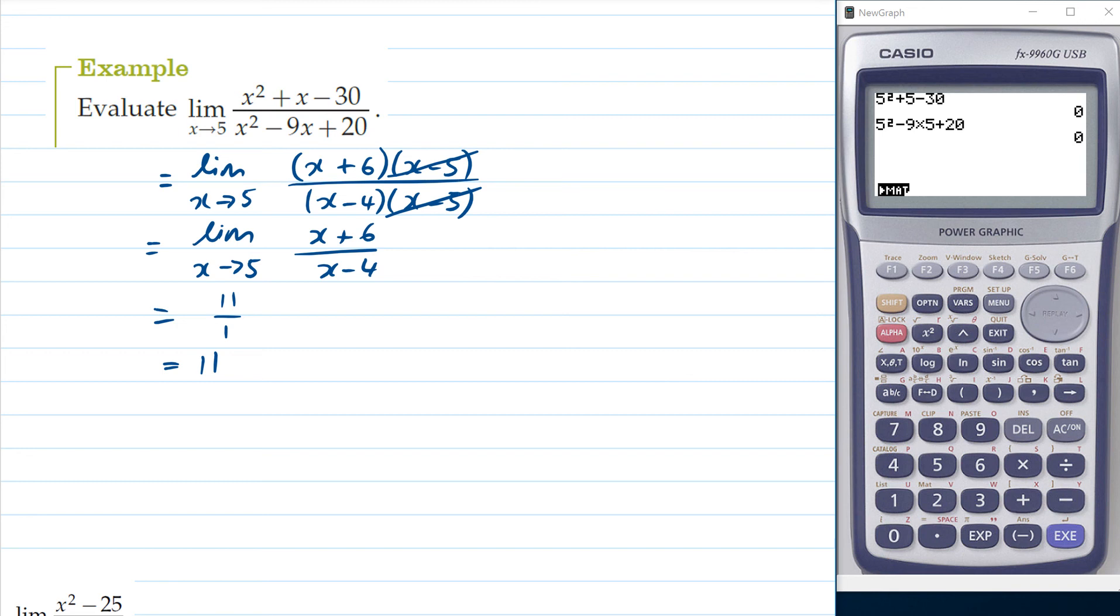So hopefully you can see here that when we originally put in 5 we got 0 over 0 which doesn't make any sense. But after simplifying our limit we get this value of 11.